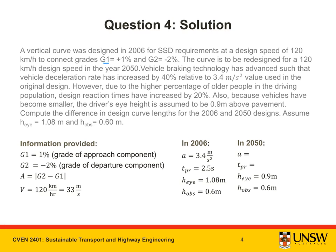I see that G1 is equal to plus 1% and G2 is equal to minus 2%. I can then go ahead and calculate the value for A, which is equal to the absolute value of G2 minus G1. That is, A is equal to the absolute value of minus 2% minus 1% equals the absolute value of minus 3%, or equal to 3%. Therefore, A is equal to 3%. Moving along through the text, I can also pick out the design speed, which is the same in 2006 and 2050. I have converted the design speed to meters per second here so that it is in SI units.